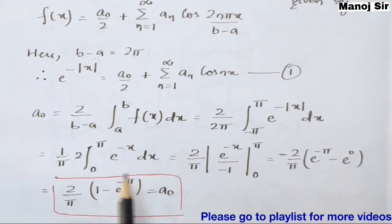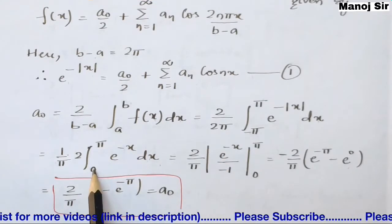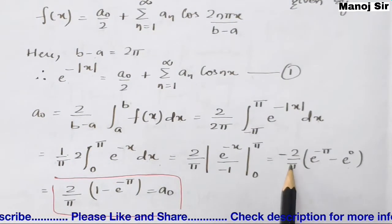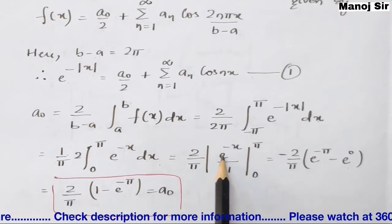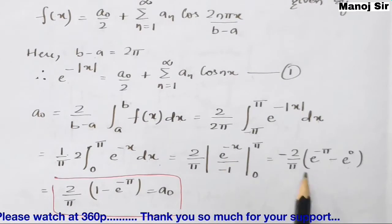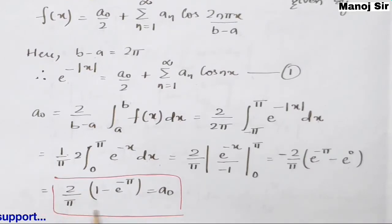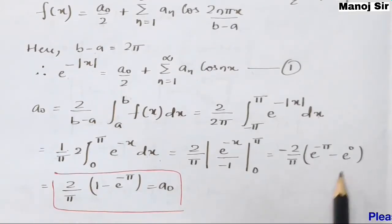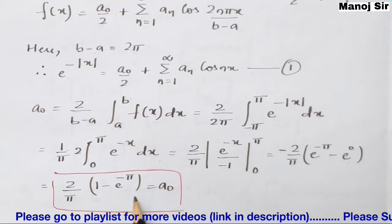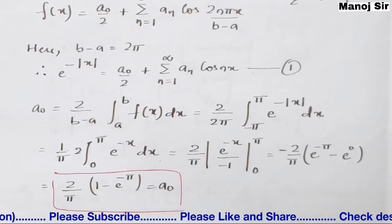So a₀ = (2/π) ∫(0 to π) e^(−x) dx = (2/π) × [e^(−x)/(−1)] from 0 to π. Taking the negative out: −(2/π) × [e^(−π) − e^0] = (2/π) × [1 − e^(−π)]. So the final value of a₀ = (2/π)(1 − e^(−π)).